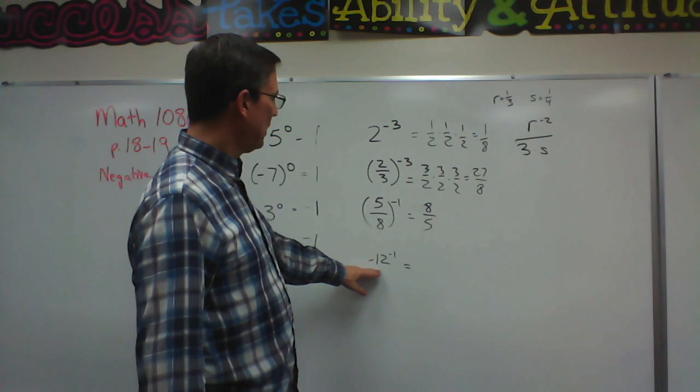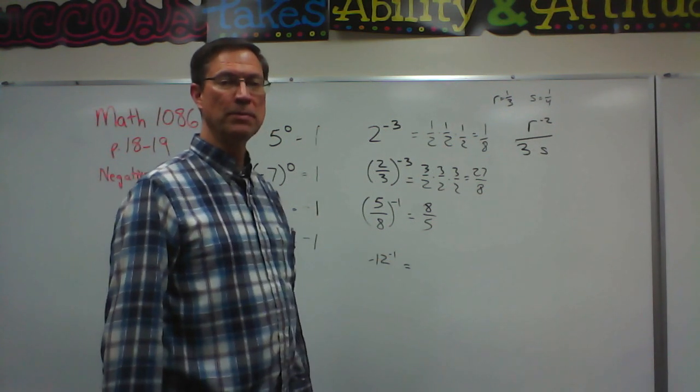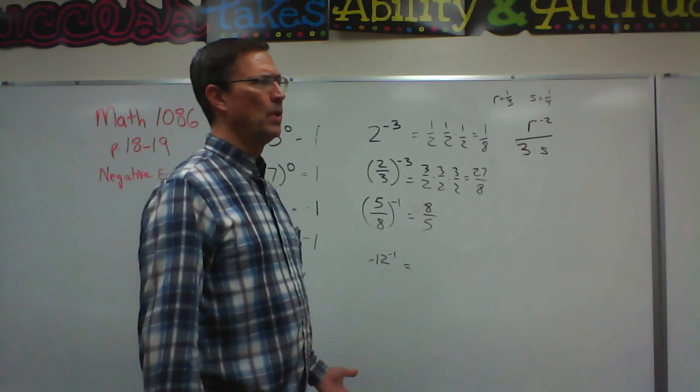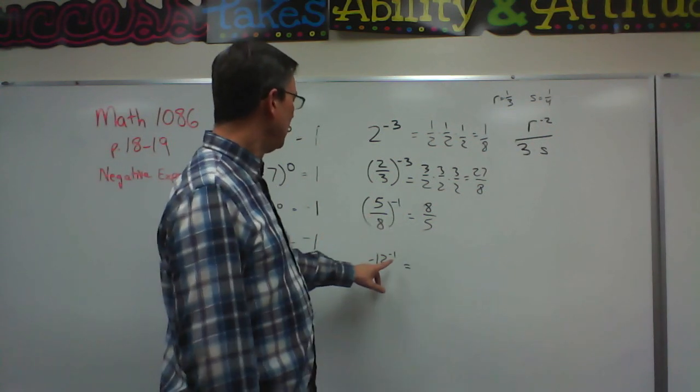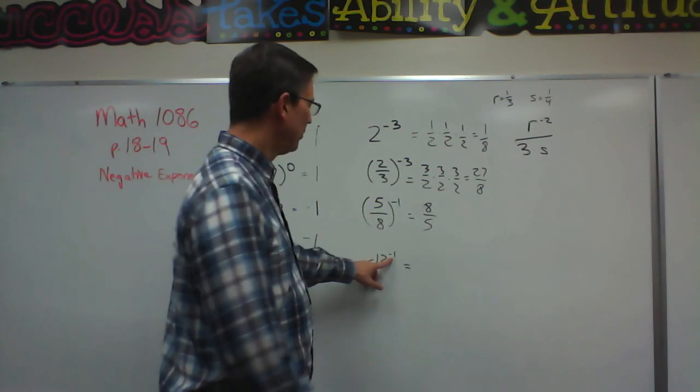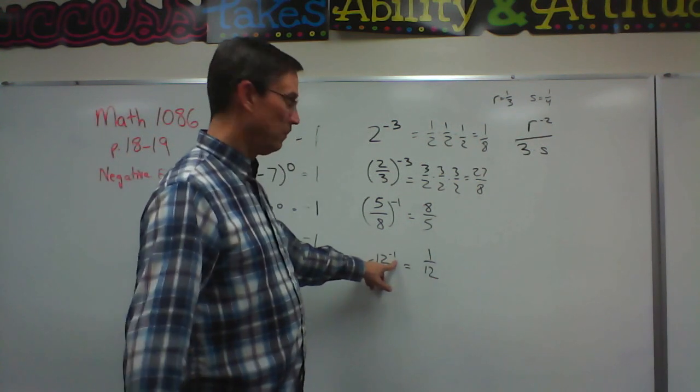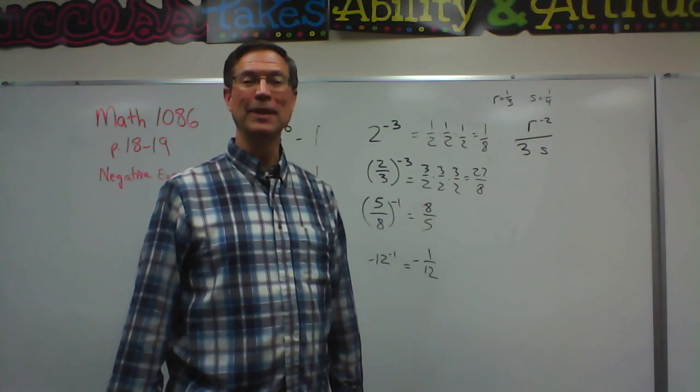Now look at this one. I have negative twelve to the negative one exponent, and sometimes students get confused because they see a negative here and a negative here, and maybe they want to multiply them and get positive twelve or whatever. No, no, no. Let's deal with the negative exponent first, so that means we do the reciprocal, and then the negative comes in and makes our answer negative. Not too bad.